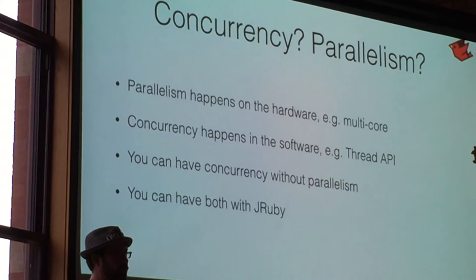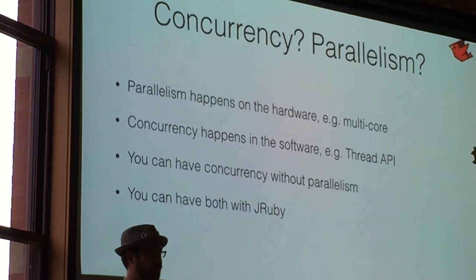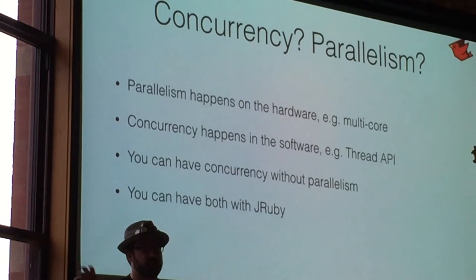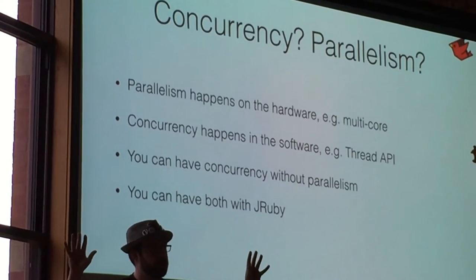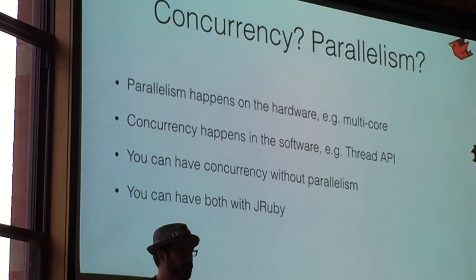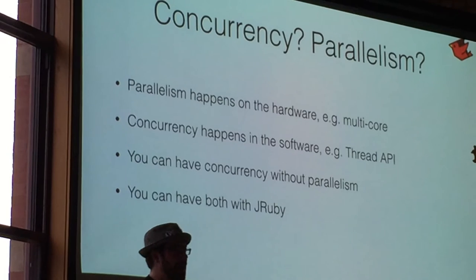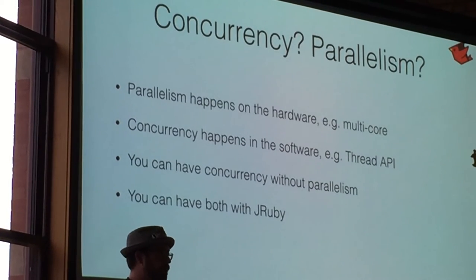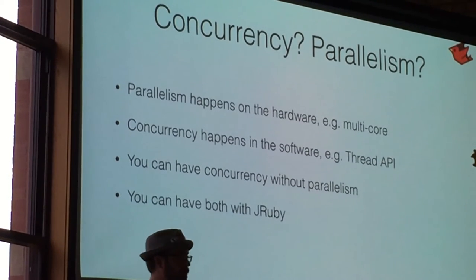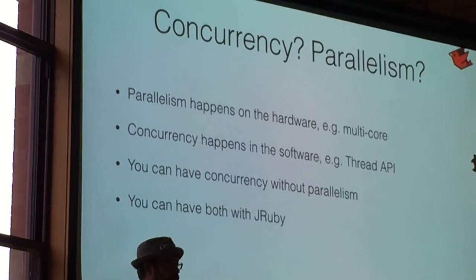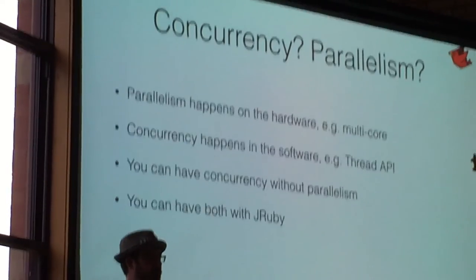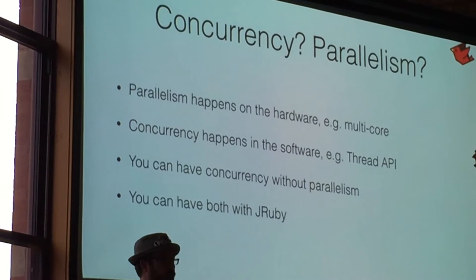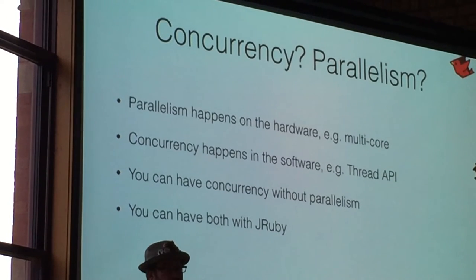Concurrency is what we have as an abstraction in software. So thread APIs, actor APIs, and so on. We feed it code. We expect that these things are going to get done roughly in the same period of time. But we're not paying attention to whether they actually run on the hardware at the same time. So there's a gap there. You can have concurrency without parallelism, as we did for years on single-core systems. But you can have both on JRuby. You can only have concurrency on CRuby because they don't have parallelism.